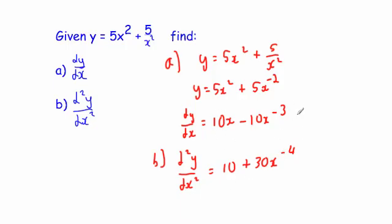Remember we could rearrange both of these back into a format which you may want to substitute values into. Here we had 10x minus, and instead of writing -10x⁻³ we could bring the x⁻³ to the denominator, so you'd get 10/x³.